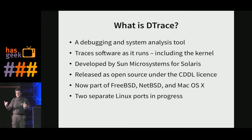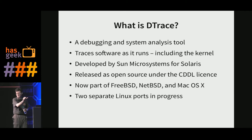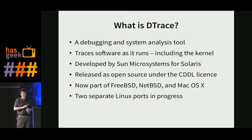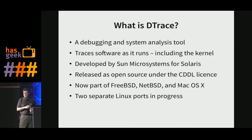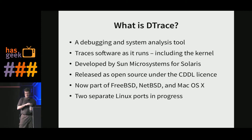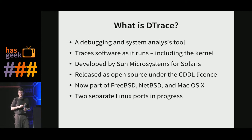DTrace traces the software as it's running, similar to strace, but it's basically looking at the entire system, and you can trace the kernel as well as userland. It's open source code, released by Sun Microsystems for Solaris first, under the CDDL license, which by some definitions qualifies as open source. It has now spread far beyond Solaris into several other open source operating systems, most notably perhaps macOS, where it is quite firmly entrenched. There are actually two separate Linux ports in progress right now.